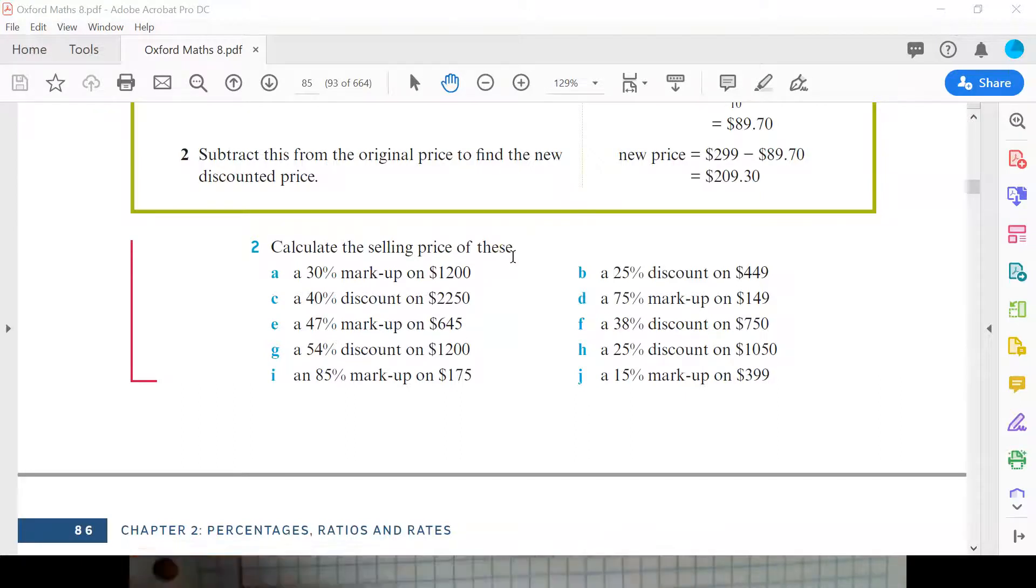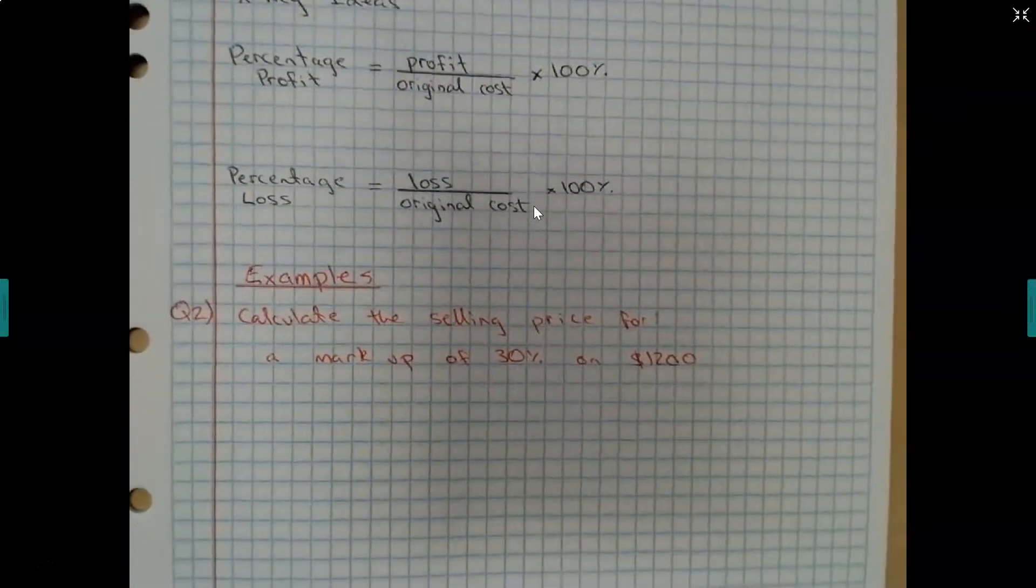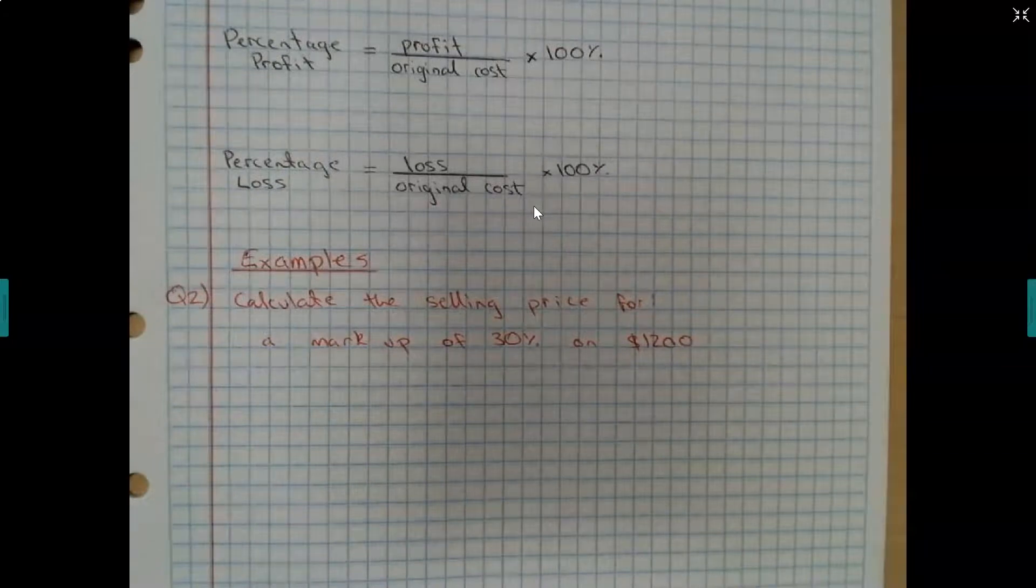We'll have a go at doing question 2A. Just copy a mark, a 30% markup on $1,200. Calculate the selling price. So, calculate the selling price for a markup of 30% on $1,200.